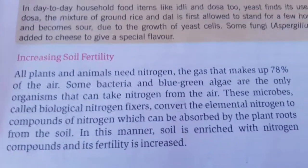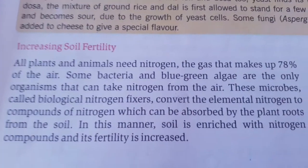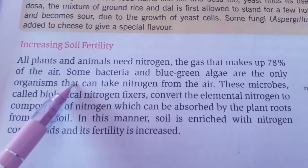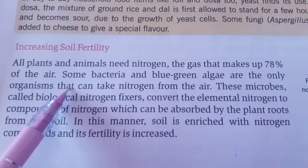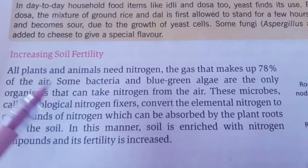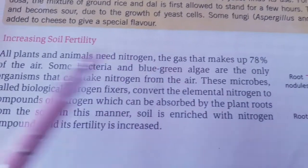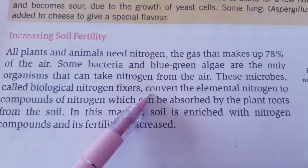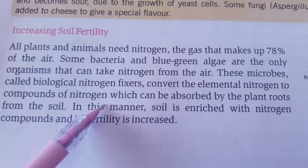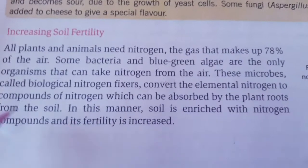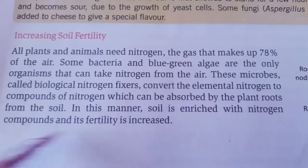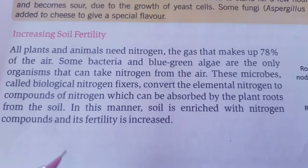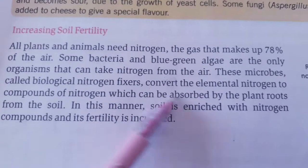Next use: increasing soil fertility. Bacteria can increase soil fertility. We know that nitrogen makes up about 78% of our atmosphere, but plants cannot use this atmospheric nitrogen directly. Bacteria and blue-green algae are the only organisms that can take nitrogen from the air — a process called biological nitrogen fixation — and convert elemental nitrogen into nitrogen compounds that can be absorbed by plant roots, thus increasing soil fertility.